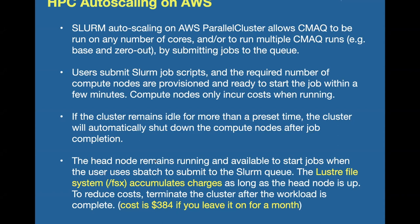The head node remains available, and that's the only thing you're being charged for between runs, with the exception of the Lustre file system and the EBS file system. Storage is still accumulating costs as long as the head node is up. For example, if you left a parallel cluster up with the head node and nothing running on it, you would incur a charge of $384 per month for that Lustre file system. It's probably something you don't want to be incurring, so it's better to delete the cluster after you're done.